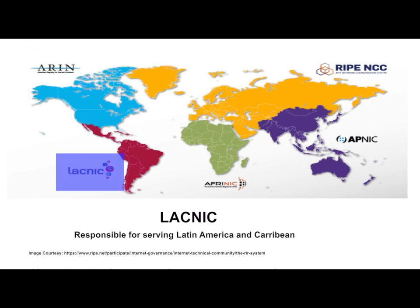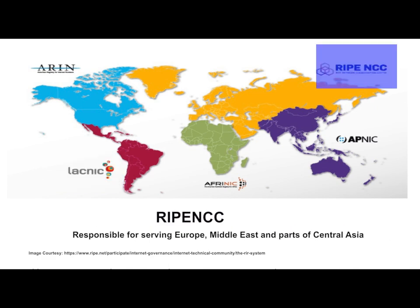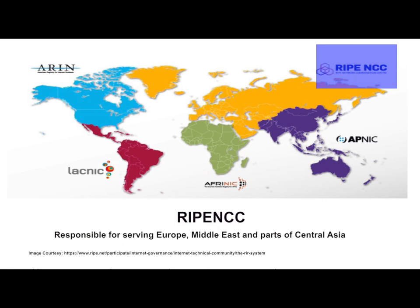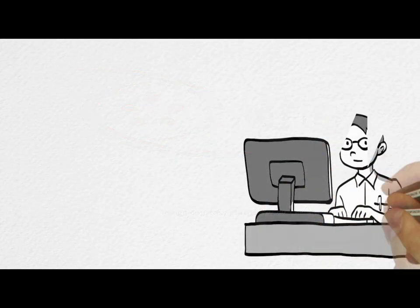LACNIC is responsible for serving Latin America and the Caribbean, and RIPE NCC is responsible for serving Europe, Middle East, and parts of Central Asia. For licensing and coordination between these 5 RIRs, there is an organization called the Number Resource Organization or NRO.